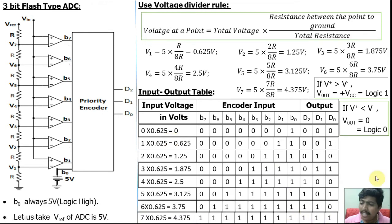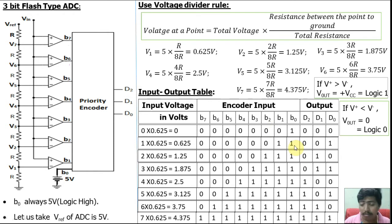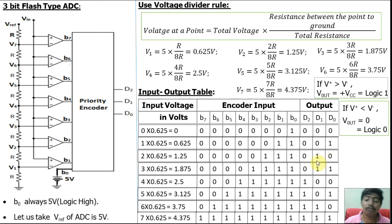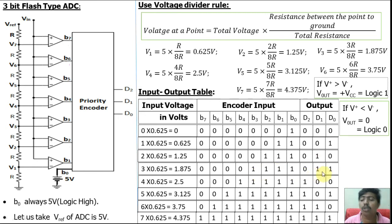The priority encoder concept: if B0 is 1, all outputs will be 0. If V1 is 1, the output may be any 1. If V2 is 1 and V0, V1 have any values, the output will be 0 and 0. If V3 is 1 and V2, V1, V0 have any other values, it gives 0 1. This is the concept of the priority encoder.